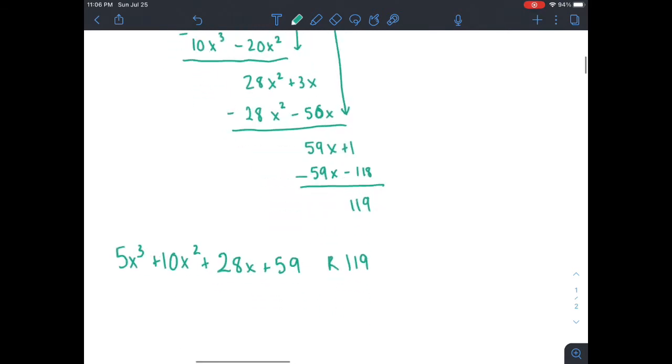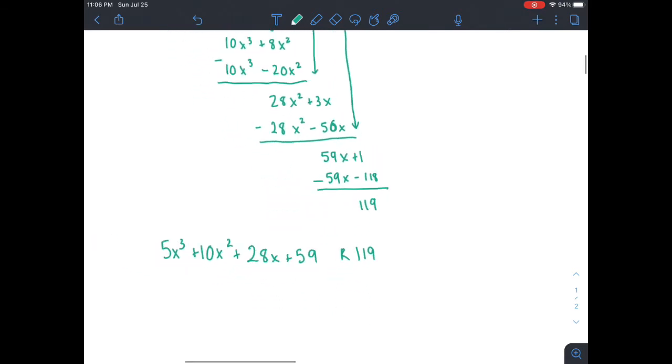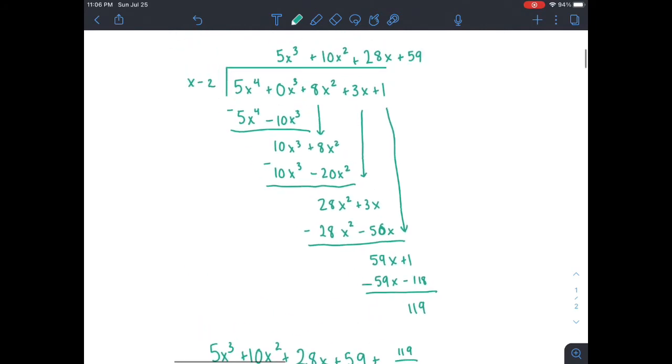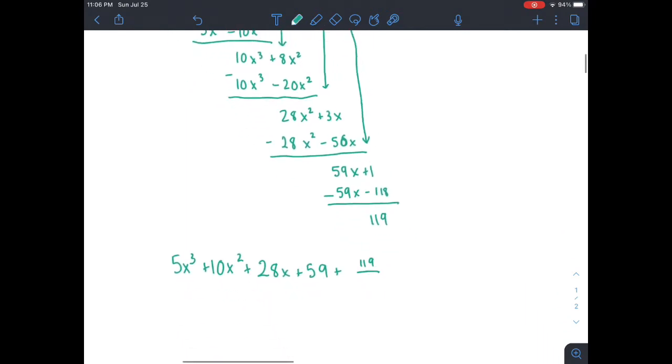But when we're doing polynomial division, usually we write the remainders a little bit differently. We would write plus 119 over whatever is here, whatever we're dividing by. And that's x minus 2. And this would be our final answer.